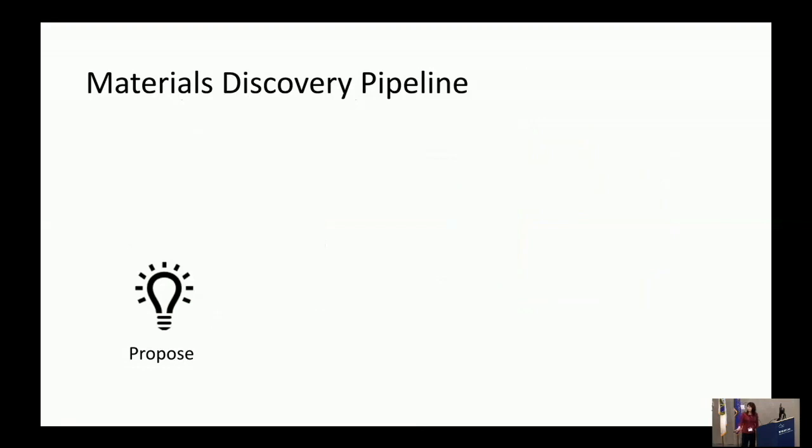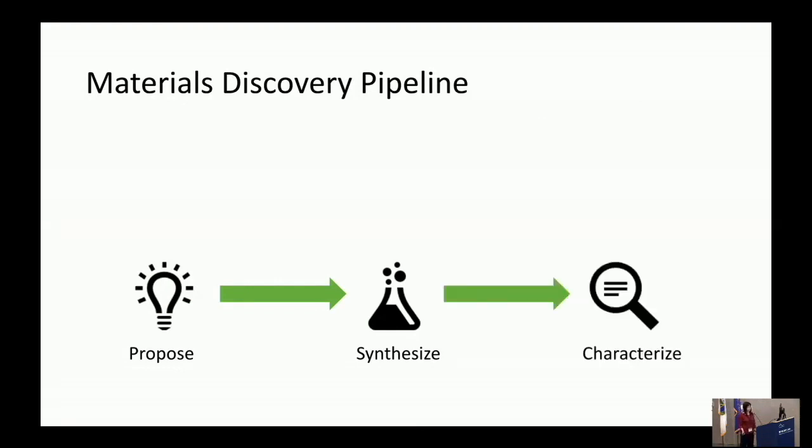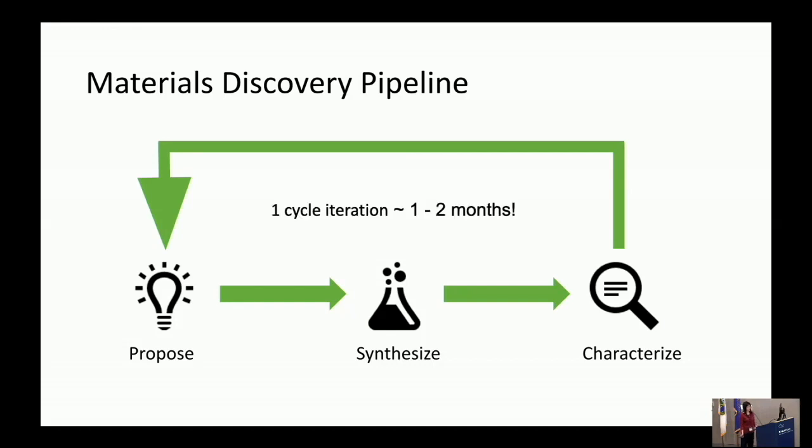So how does the pipeline look like for finding these molecules? First, somebody proposes these molecules using their intuition or maybe some results from calculations. Then another person has a proposed synthesis for all the proposed molecules, and they go and synthesize the molecules. Once you synthesize the molecules, you have to characterize them to make sure that they have the properties that you wanted, as well as to make sure that the product you synthesized is pure.